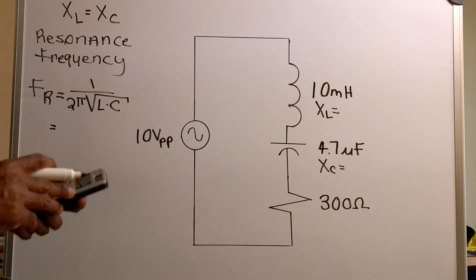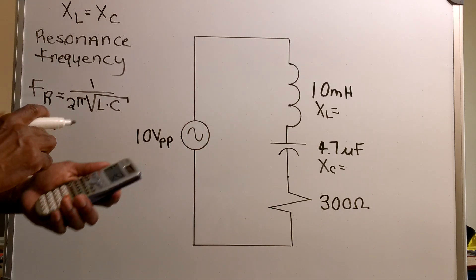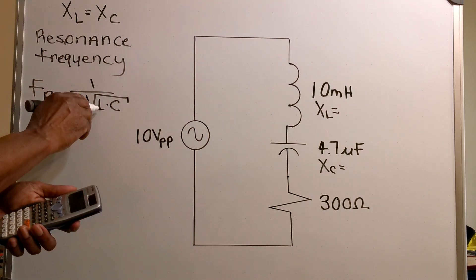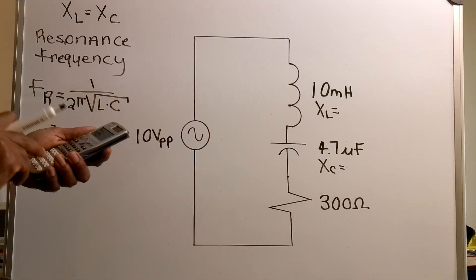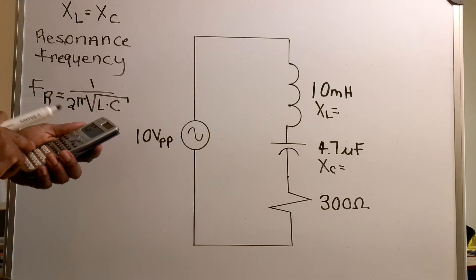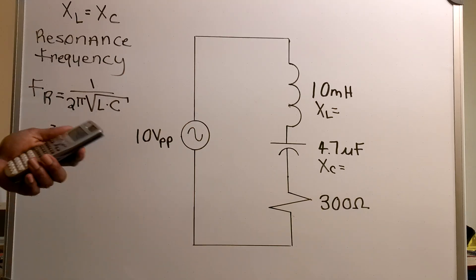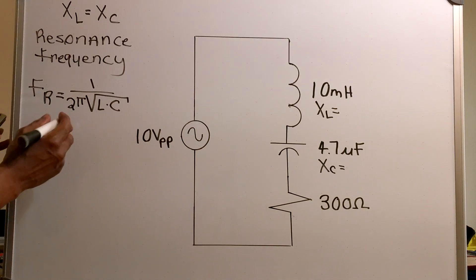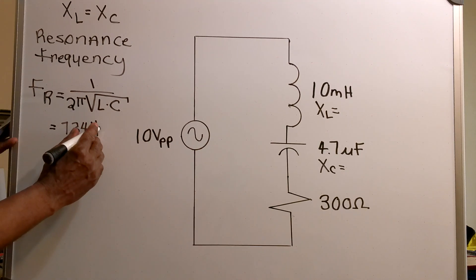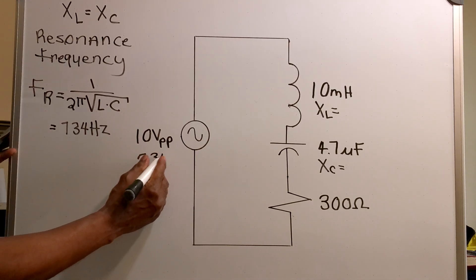Now I'm going to plug that into my calculator: 1 over 2 pi times the square root of the inductance, which is 10 mH, times my capacitance, which is 4.7 mF. That gives me 734 Hz. So my frequency will be 734 Hz.